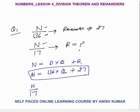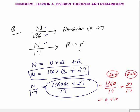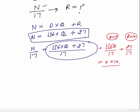The question says N divided by 17, what will be the remainder? Put the value of N: (136Q plus 27) divided by 17. Now 136 is completely divisible by 17, so the remainder for 136Q divided by 17 is 0. For 27 divided by 17, the remainder is 10. So the final remainder is 0 plus 10 equals 10. The final answer is 10, because 136 is completely divisible by 17.